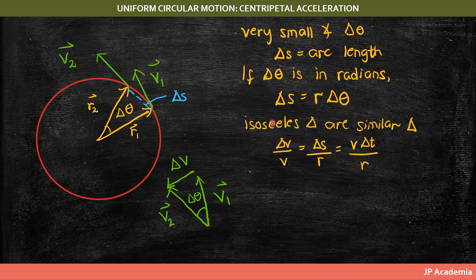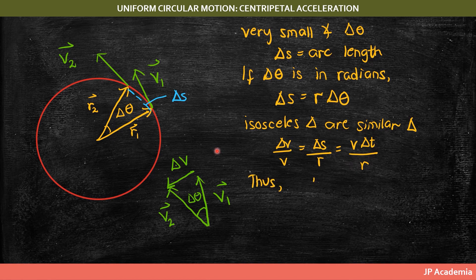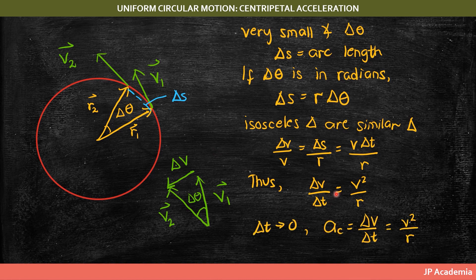If the two isosceles triangles — one for the position vector and one for the velocity — are similar triangles, we can express the ratio: delta v over v equals delta s over r, which equals v delta t over r. Therefore, we can derive the expression for centripetal acceleration, which is directed toward the center of the circle.